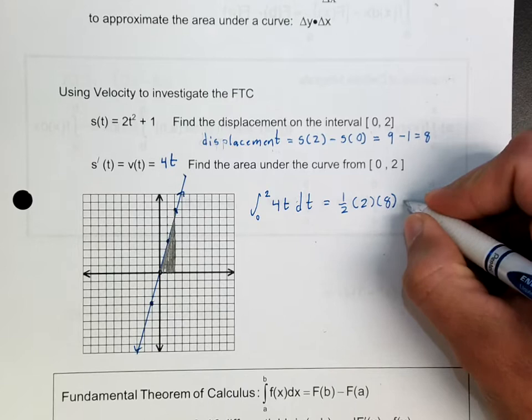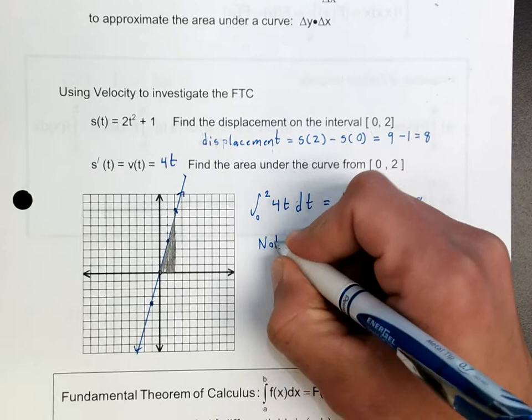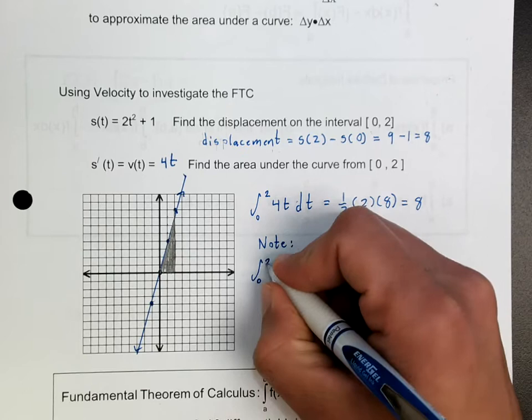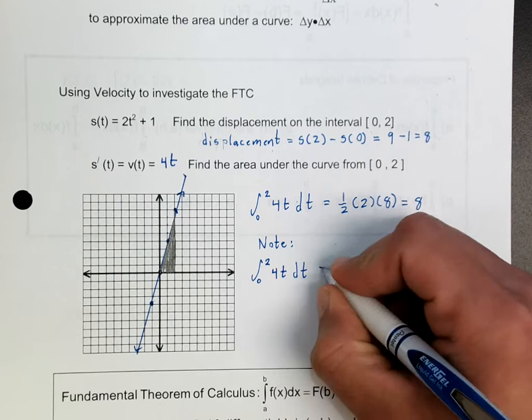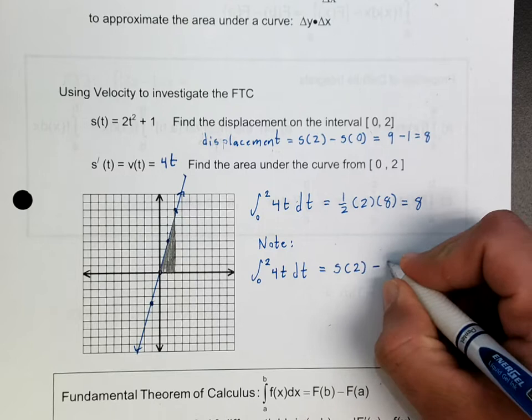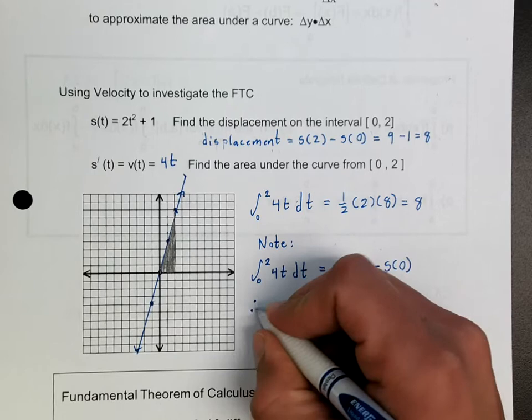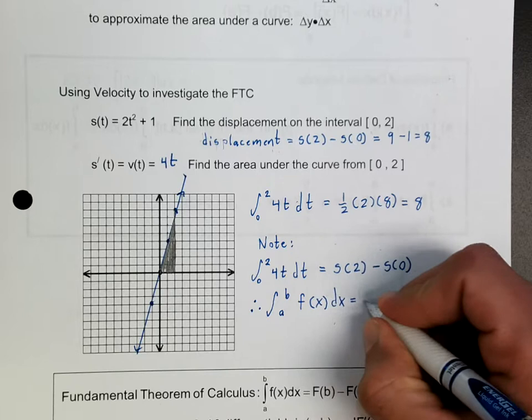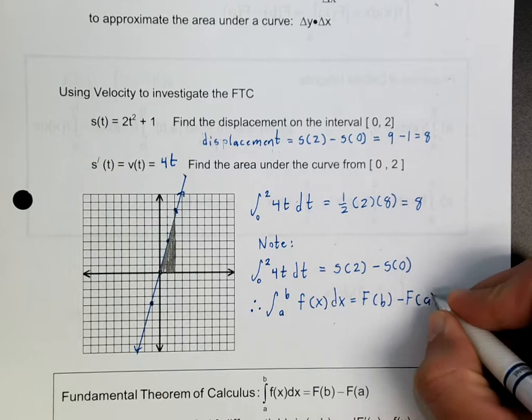Now please notice that this number and that number are exactly the same. So notice that they're exactly the same, and therefore that must mean that the antiderivative of 4t dt between 0 and 2 is equal to the displacement between 2 and 0. And that's going to lead us to something pretty important — the Fundamental Theorem of Calculus.